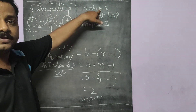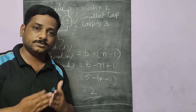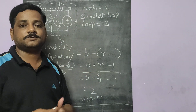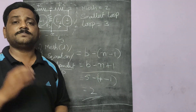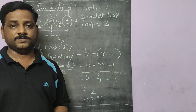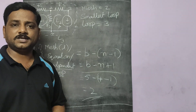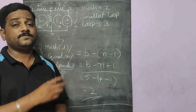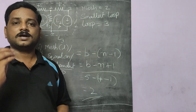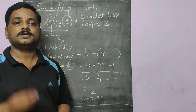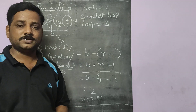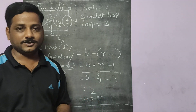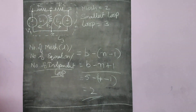For any complicated circuit you can use this formula to find the number of independent loops. I hope it is very clear. If it is, please like the video, comment on it, and subscribe to this channel for more videos. Thank you.